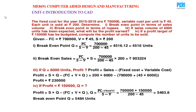Problem 4: The fixed cost for the year 2015-16 is 7 lakhs, variable cost is 45 per unit sold at 200. Determine the break-even point in terms of sale volume.